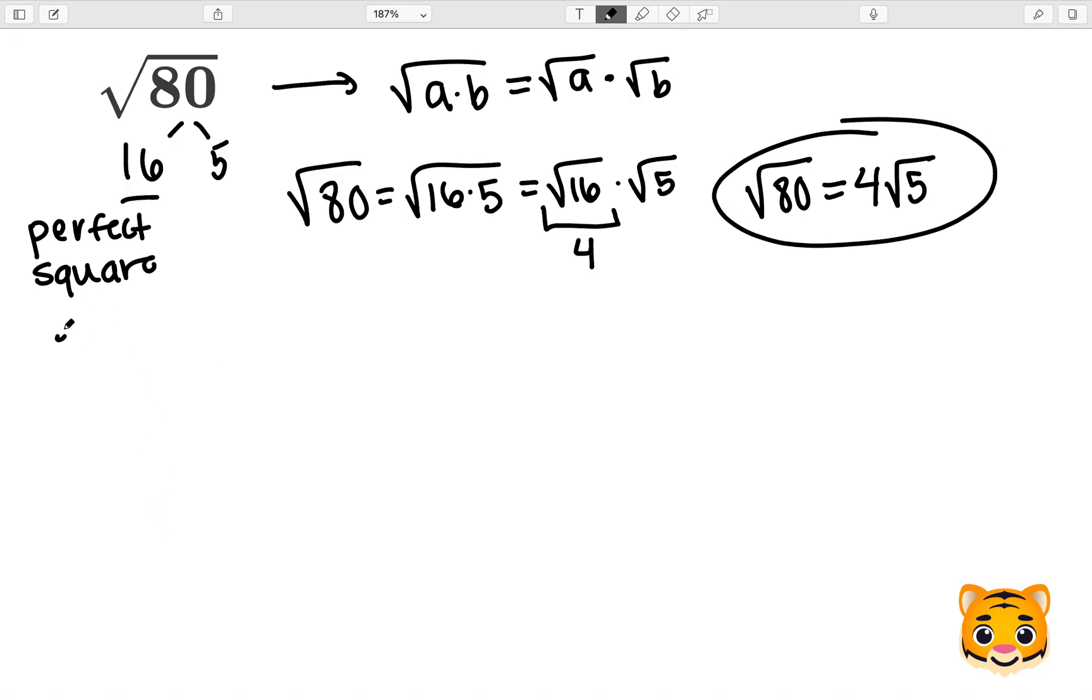We can also estimate the square root of 80 to the nearest whole number by taking a look at perfect squares nearby to this value. So 8 squared gives us 64, and 9 squared gives us 81. As you can see, 80 is between 64 and 81.